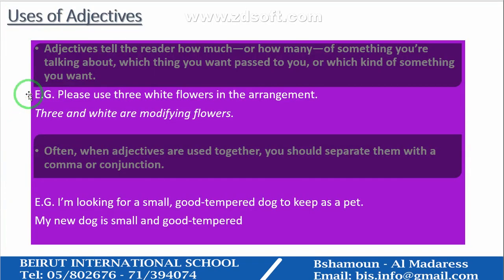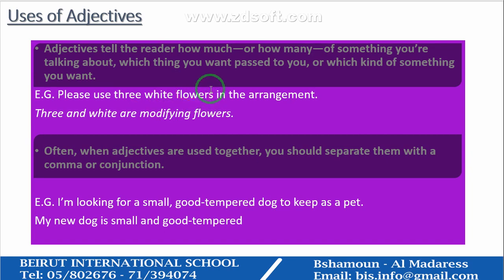Uses of adjectives: adjectives tell the reader how much or how many of something you're talking about, which thing you want, or which kind of something you want — they specify exactly. For example: 'Please use three white flowers in the arrangement.' By using the adjectives 'three' and 'white', we know more about the flowers needed.